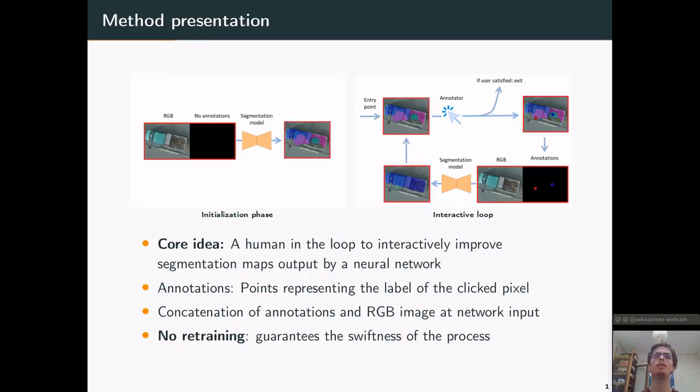I will now present more in-depth how this framework works. As shown in the demo, the core idea of our framework is to add a human in the loop in order to interactively improve the segmentation maps output by a neural network. So there is an initialization phase where the neural network proposes an initial segmentation of the scene. And then, it iteratively uses user annotations as guidance to enhance its initial prediction. So this is the interactive loop.